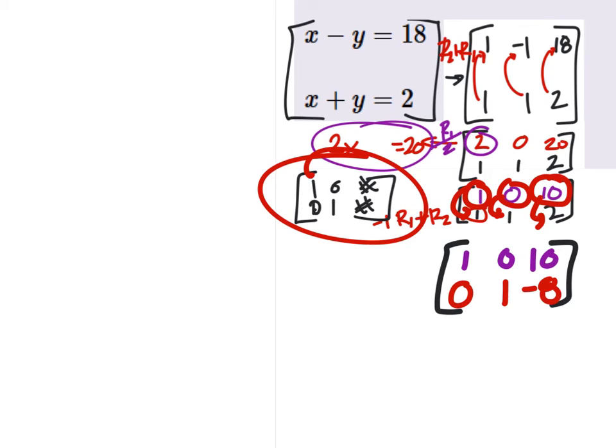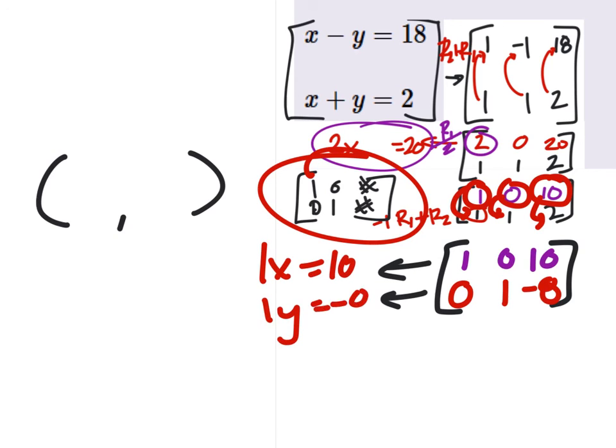So our answer, which it wanted as a point, if we change these back to equations, we got 1x equals 10, and 1y equals negative 8. So x is 10, y is negative 8.